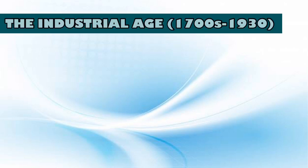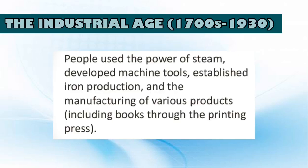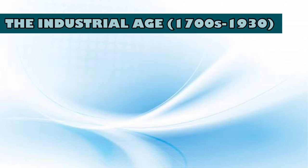Let's proceed to the next phase, which is the Industrial Age. This is where people use the power of steam, develop machine tools, and establish iron production and the manufacturing of various products, including books through the printing press.